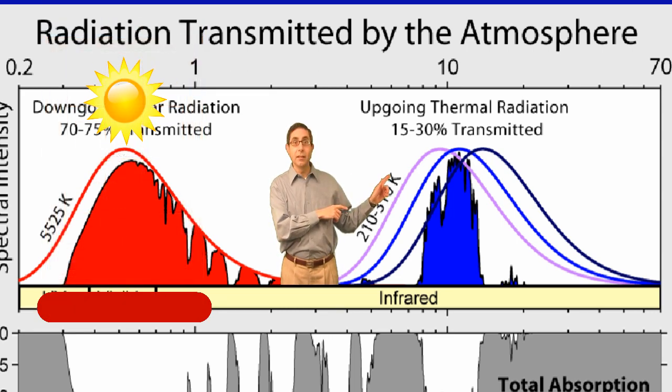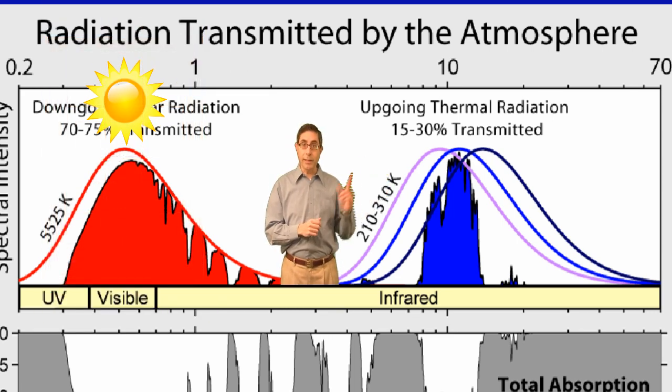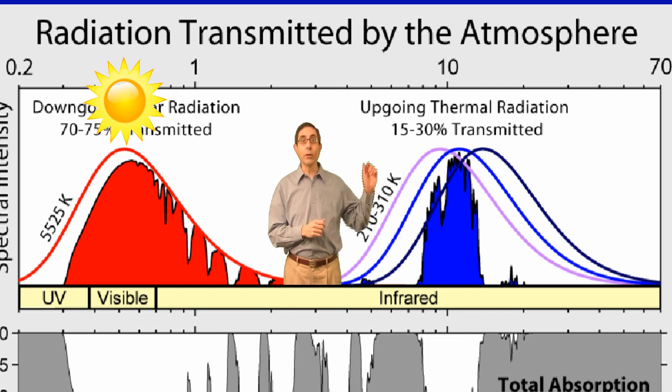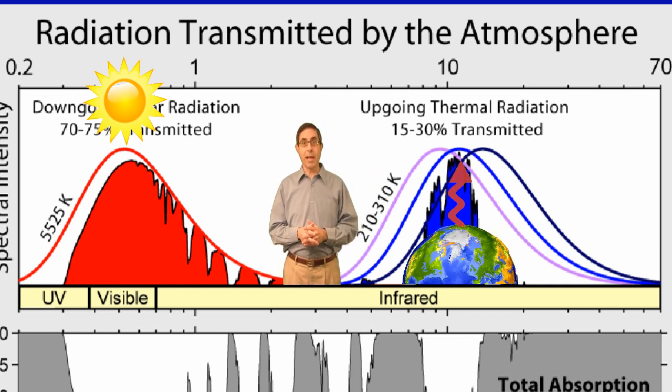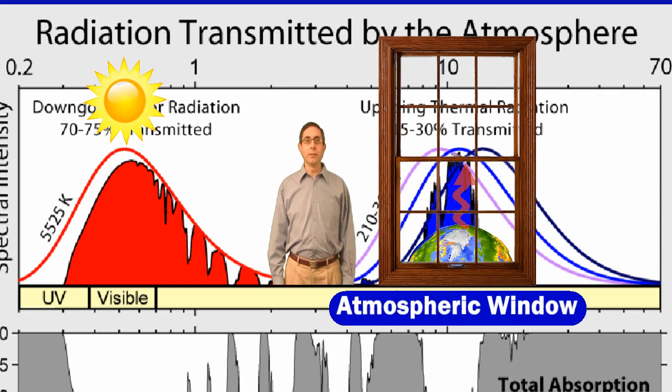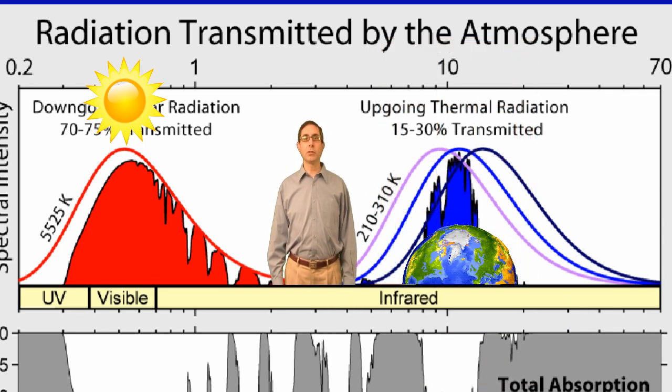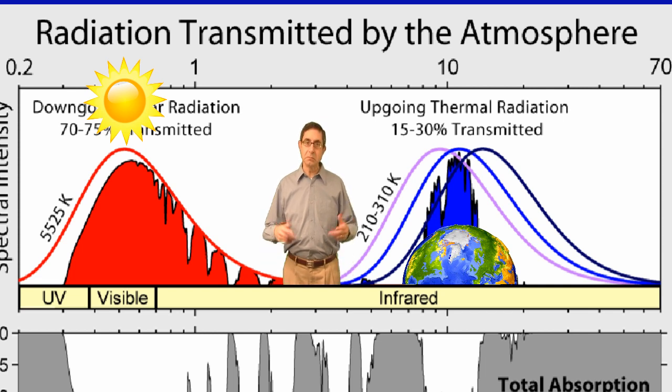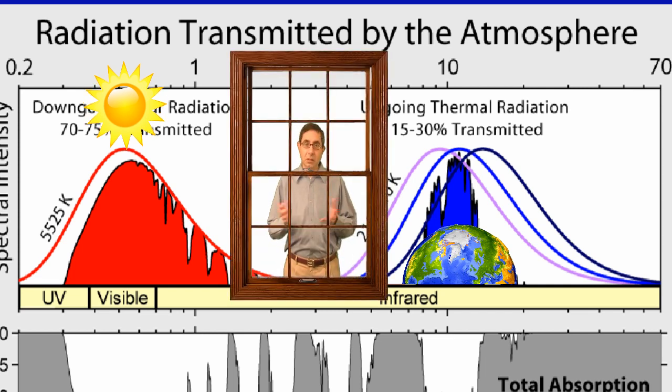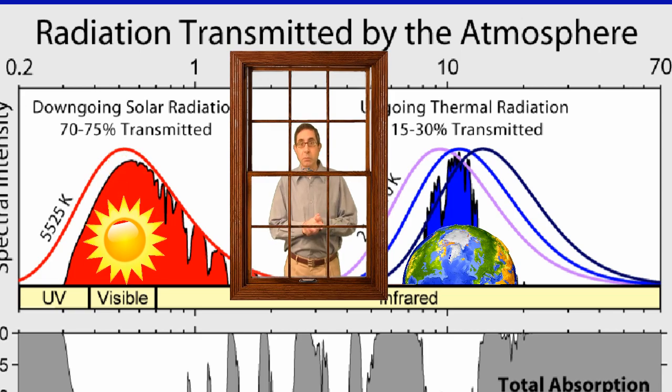The right side shows the outgoing longwave radiation from the Earth that passes out of the atmosphere. This is known as the atmospheric window. These windows are where the atmosphere is transparent to certain wavelengths of energy. You know, window, glass, transparent.